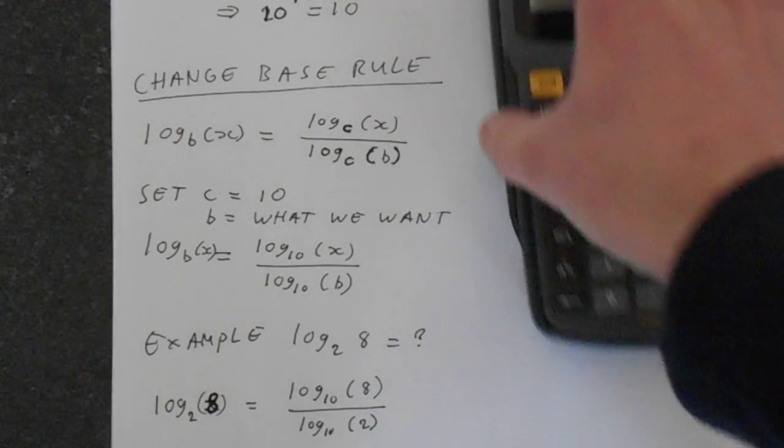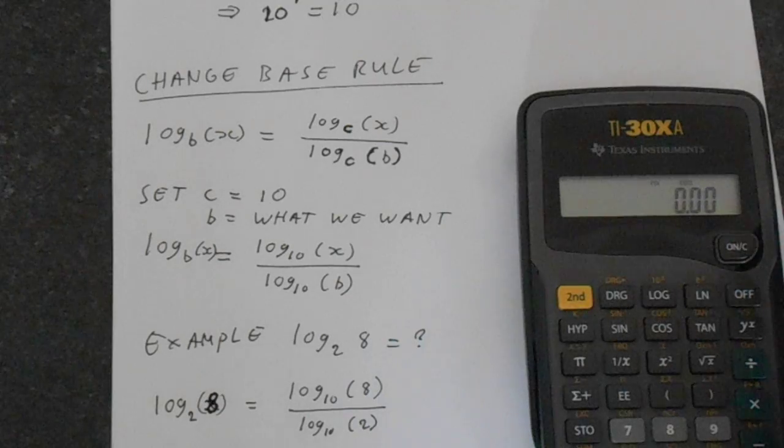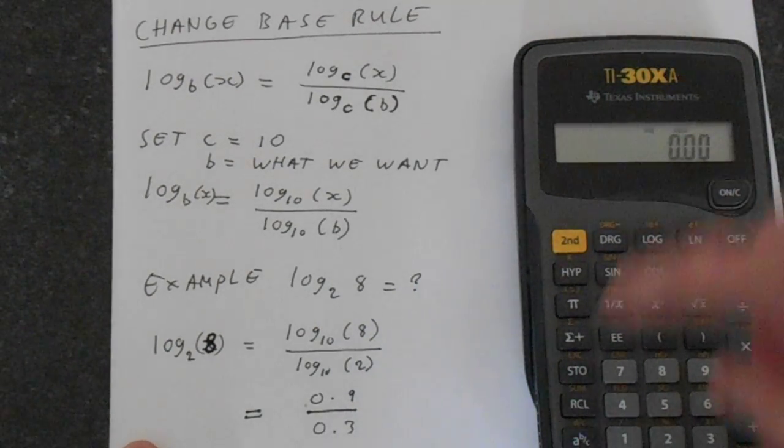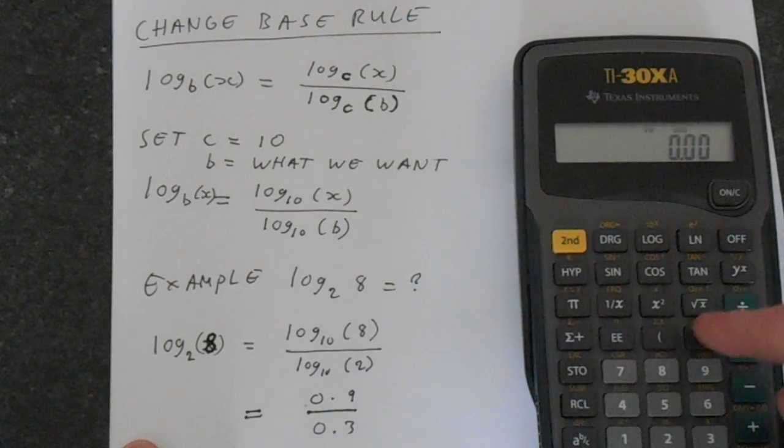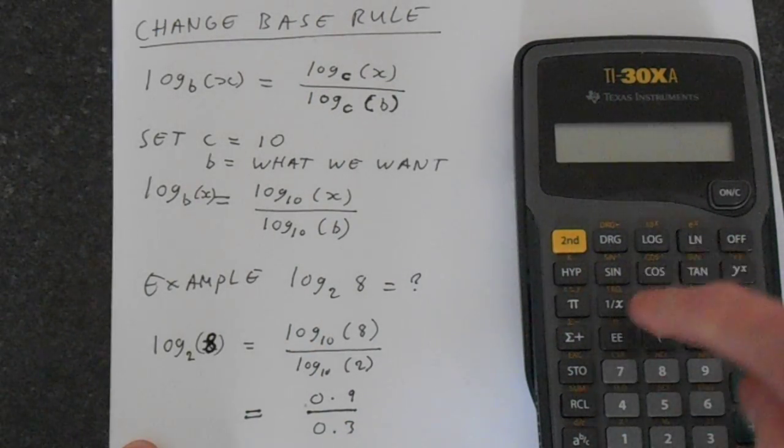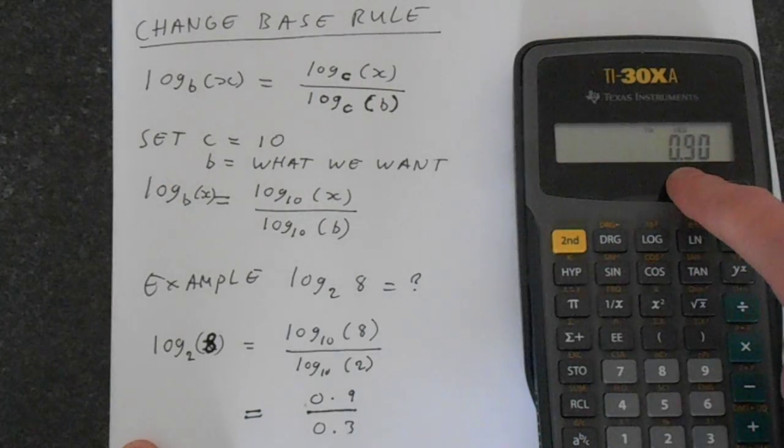It's a good idea to do this in two steps. It'll make a lot more sense if you do that. So let's put this in the calculator, log 10 of 8. So remember we're pressing 8 first and then log, by default it's base 10, so we're getting 0.9.